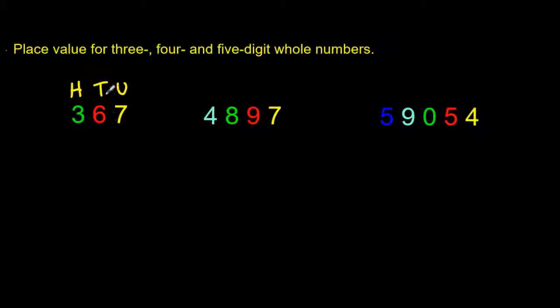So if I was to partition this number, it would look like 300 plus 60 plus 7. If anyone asks what is the value of this 6, the value of that 6 would be 60. The value of this 3 is 300.